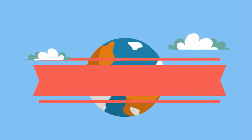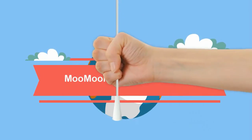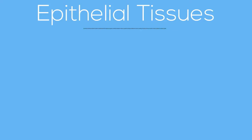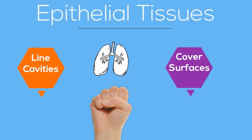Welcome to Moo Moo Math and Science. In this video I would like to talk about epithelial tissues. Our body is made up of several different types of tissue. Epithelial tissues line cavities and cover surfaces of vessels and organs.